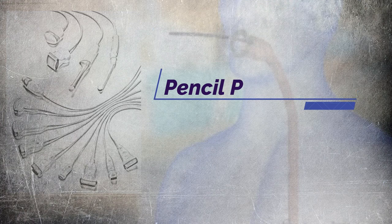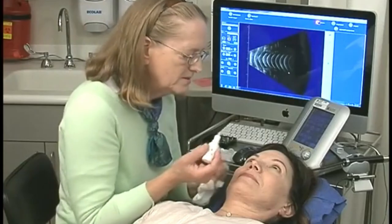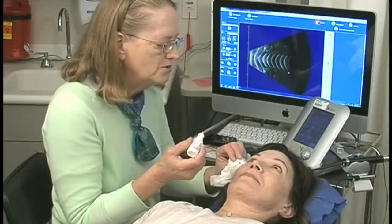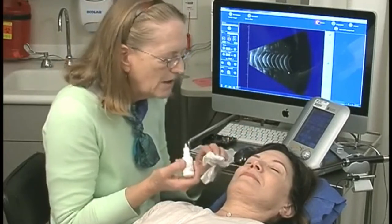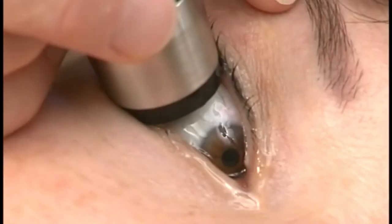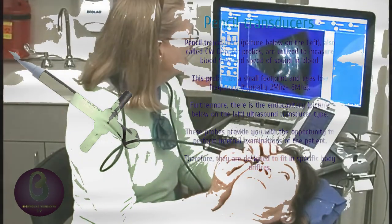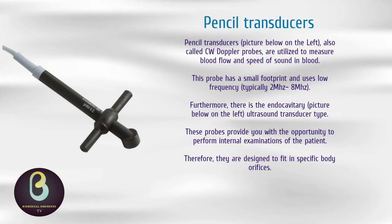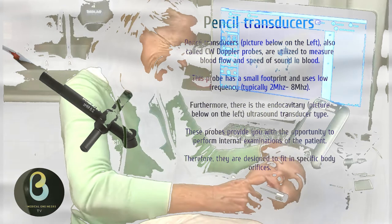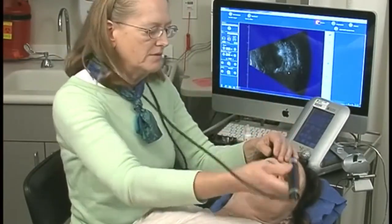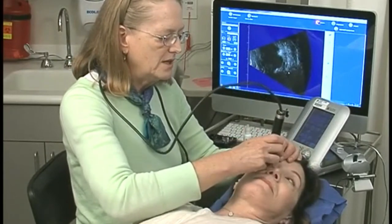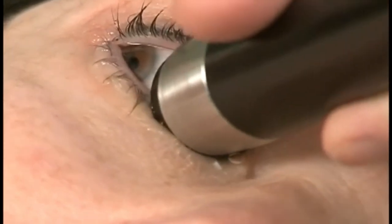Last but not the least is pencil probes. Pencil transducers, also called CW Doppler probes, are utilized to measure blood flow and speed of sound in blood. This probe has a small footprint and uses low frequencies, typically 2 MHz to 8 MHz. Furthermore, there is the endocavitary ultrasound transducer type. These probes provide the opportunity to perform internal examinations of the patient and are designed to fit in specific body orifices. The endocavitary transducers include endovaginal, endorectal, and endocavity transducers, with a small footprint and frequency range of 3.5 MHz to 11.5 MHz.